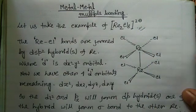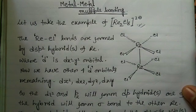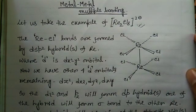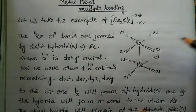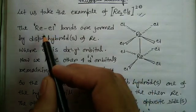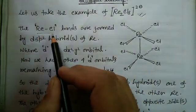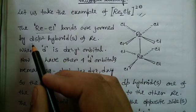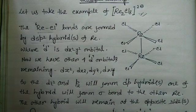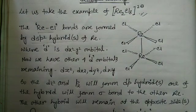Before discussing how to calculate the number of metal-metal bonds, we first have to look into the bonding in this complex, because we need to know which orbitals are involved in forming the metal-metal bonds. Knowing the structure of this complex is very important. The rhenium-chlorine bond is formed by dsp² hybrid orbitals of rhenium, involving the d, s, and p orbitals.